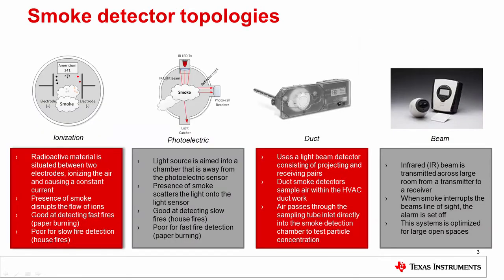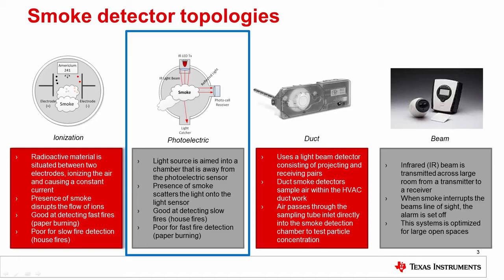There are different types of smoke detectors, each of which has its own benefits and shortcomings. By far the most popular types on the market today are ionization detectors and photoelectric detectors. There are also combo detectors available which contain both sensors in a single unit. Duct and beam detectors are designed for specific applications, but at their heart they use a specialized form of a photoelectric sensor to detect smoke. Because ionization sensors are facing ever-increasing environmental regulation, the remainder of this presentation will be focused on the photoelectric detector.